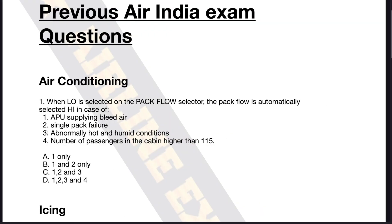Now what about statement number three and statement number four? Abnormally hot and humid conditions, or if the number of passengers in the cabin exceeds a certain number? Well, this is where the question gets tricky. Remember, the question is: the pack flow is automatically selected to high. Options three and four are not automatic selections — these are recommendations by Airbus to the pilot flying to switch to high flow if these conditions exist. Where is this mentioned? Let me show it to you.